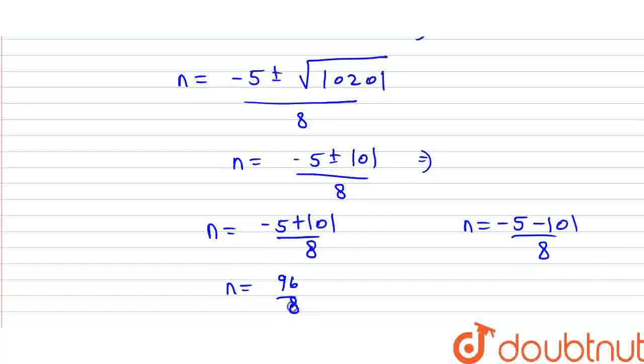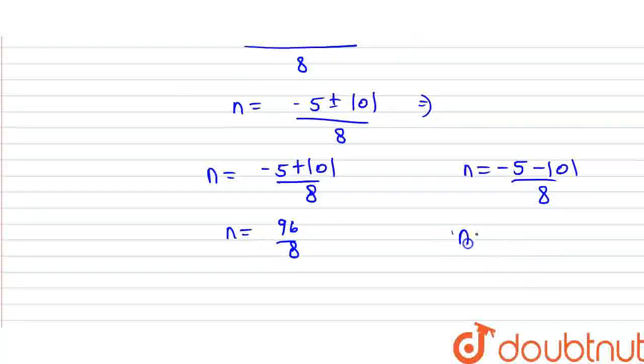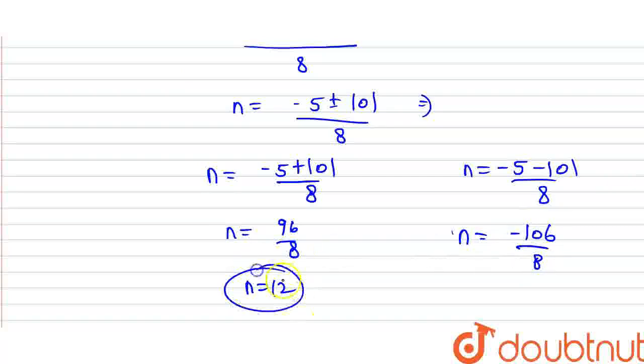Here we have 96 upon 8, and here n equals minus 106 upon 8. n value here: 12. Now n can't be negative, so we neglect that value. So we have 12.